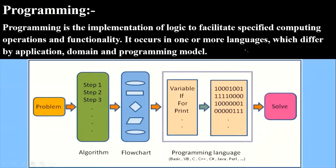Programming occurs in one or more languages which differ by application domain and programming model, meaning we have different kinds of programming languages that we can use to perform any task. For example, for any problem we want to solve, first of all we have to write an algorithm — step-by-step instructions to solve the problem — and after that, a flowchart, which is a graphical representation of the problem.